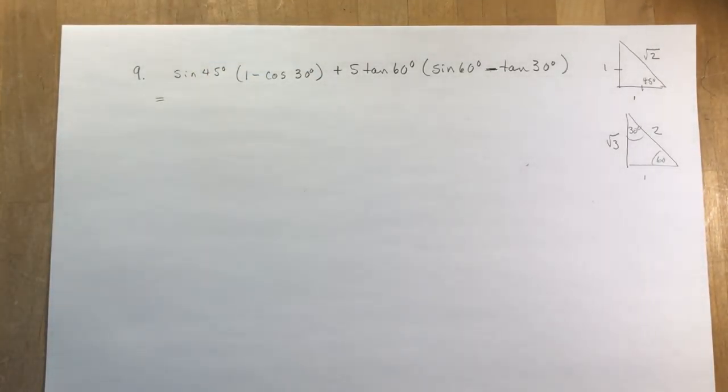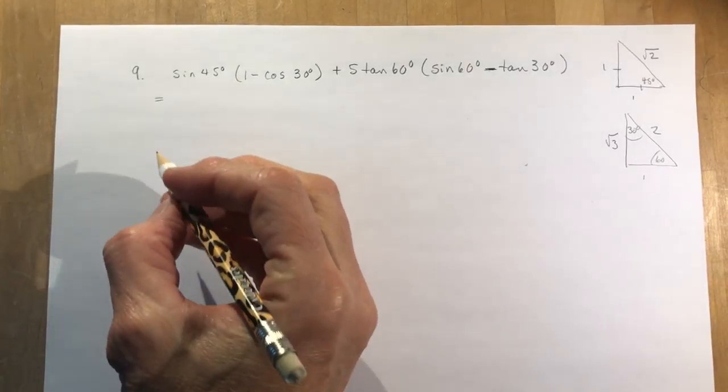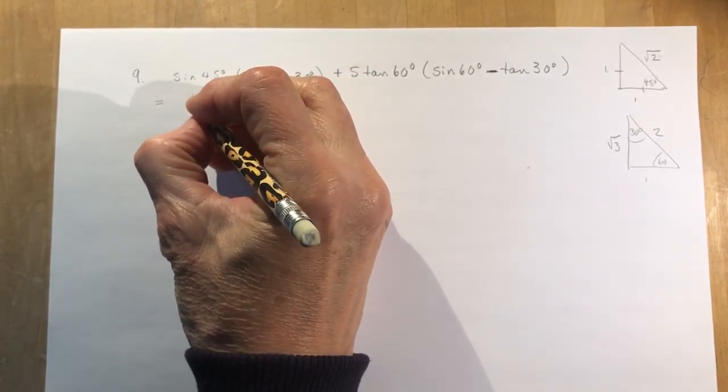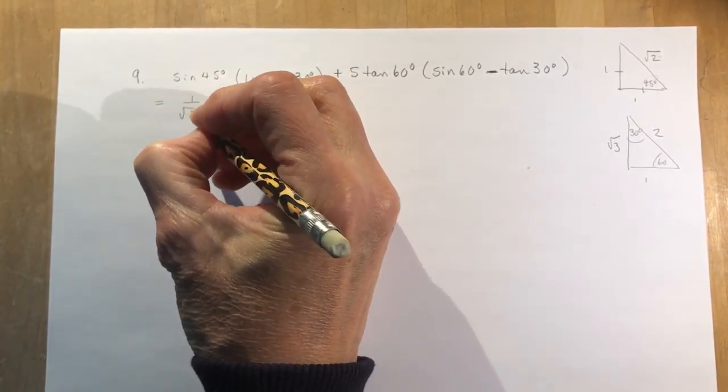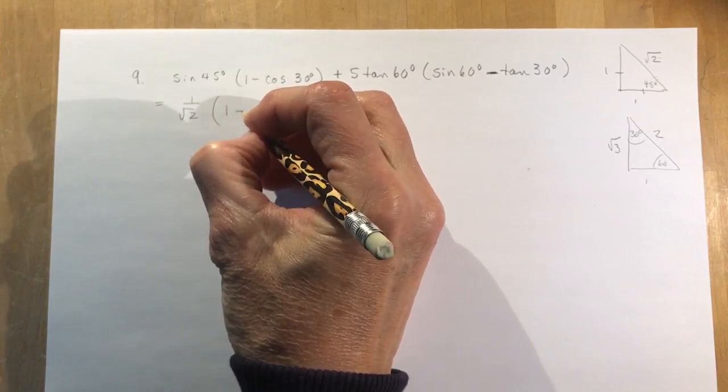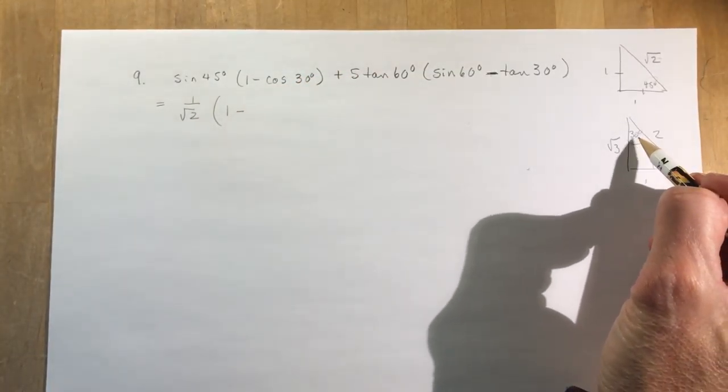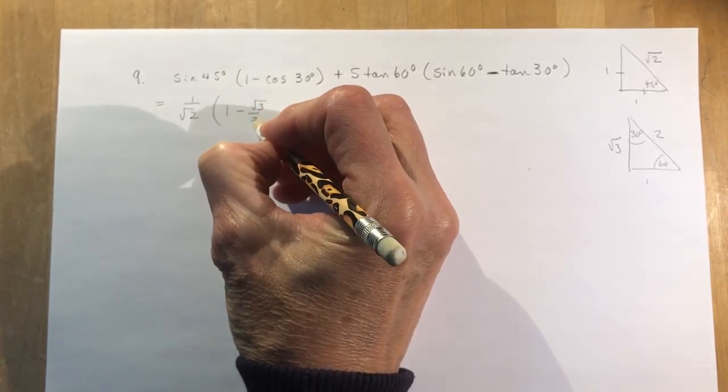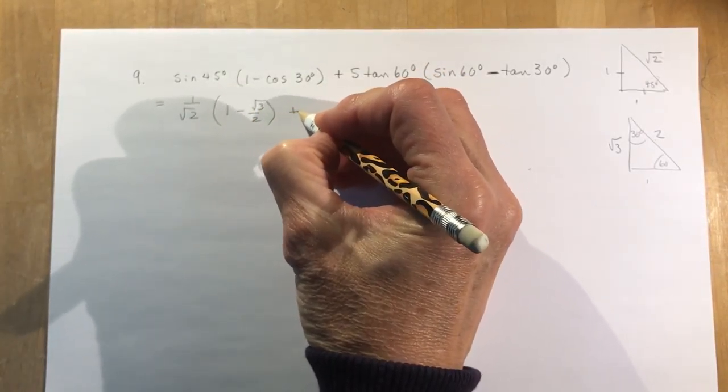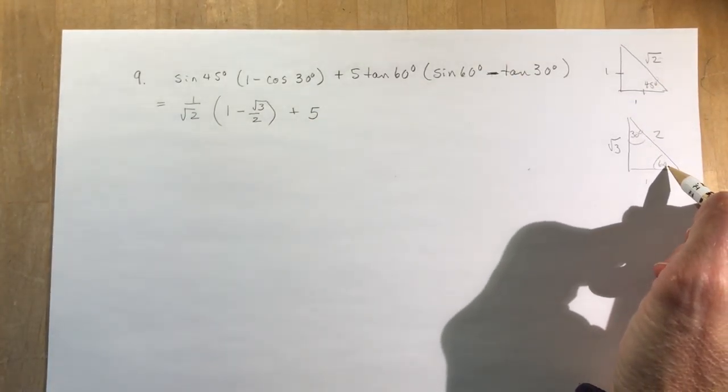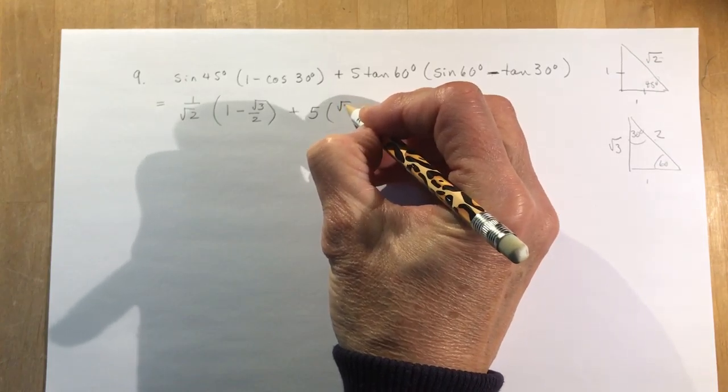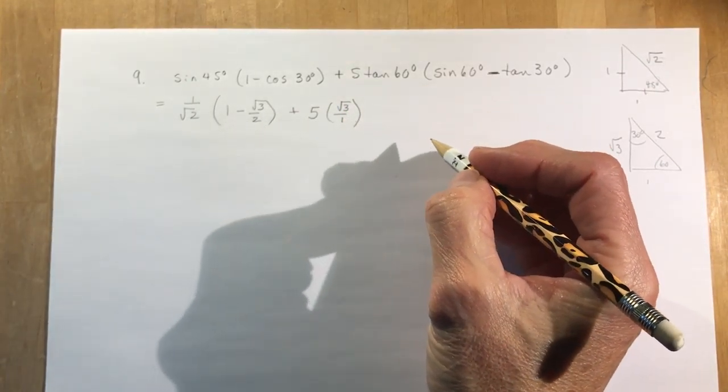The hard part for this question is mainly in the actual calculation. So the sine of 45 degrees, sine here, opposite over hypotenuse, that gives you 1 over root 2. And then 1 minus the cos of 30, the cos of 30, you're up here, adjacent over hypotenuse is root 3 over 2. And then you're adding 5 times the tan of 60, tan of 60, opposite over adjacent, that's root 3 over 1. We'll just put it over 1, so we have all fractions here.